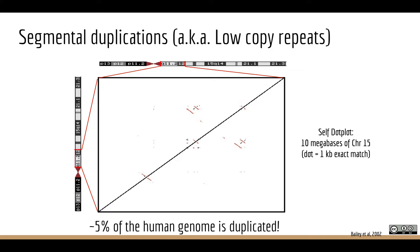This is a dot plot — every time there's a match you get a dot. Aligning the same chromosome to itself gives a perfect match on the diagonal. But what Bailey and Eichler saw were off-diagonal red dots indicating lots of apparent duplications, deletions, and inversions — large-scale events even within the same chromosome. This suggested large-scale duplications and deletions much larger than transposon insertions, which were termed segmental duplications, also known as low copy repeats. Their paper concluded that at least 5% of the genome has these big segmental duplications.